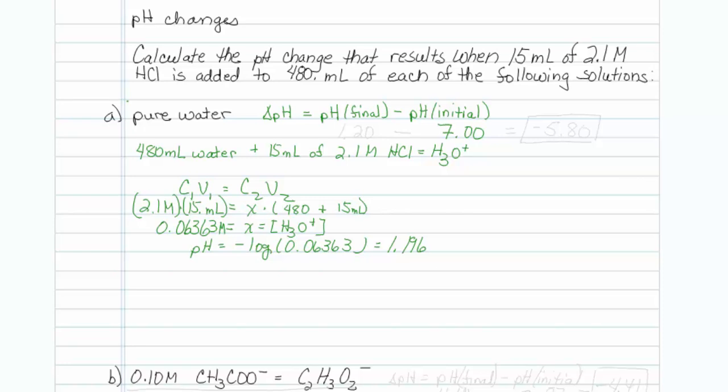So I will put this in as my final as 1.20 minus 7.00. So notice that you do get a negative number. You do get a negative 5.80 as the pH change. That's the first one.